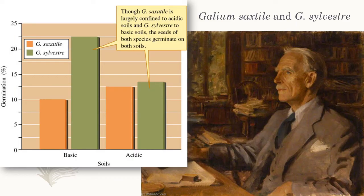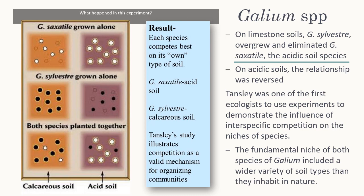Here is a picture of him and the results of his experiment. He was looking at germination of seeds on the different soils, and found that on the acidic soils, germination of saxatile — the orange bars — was only slightly elevated from its germination on the basic soil. The sylvestre seeds could germinate on both soils as well. So they could germinate in both places, meaning it is possible that they could survive in both places. He then grew each species by itself and then grew them together.